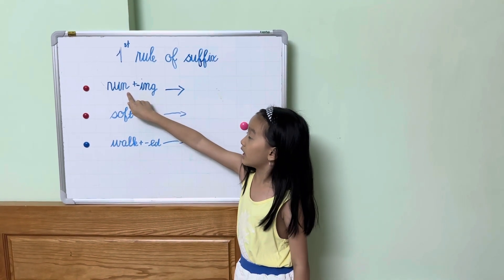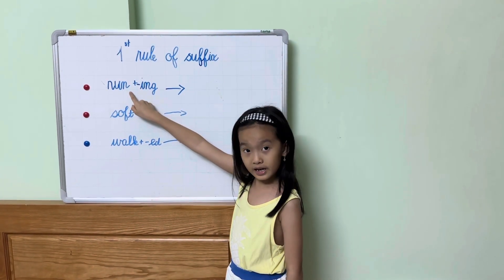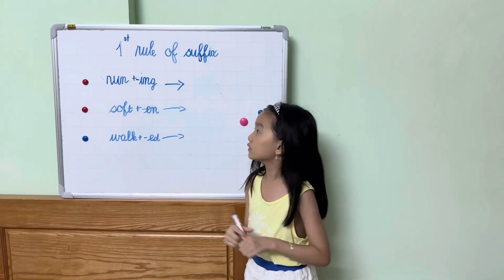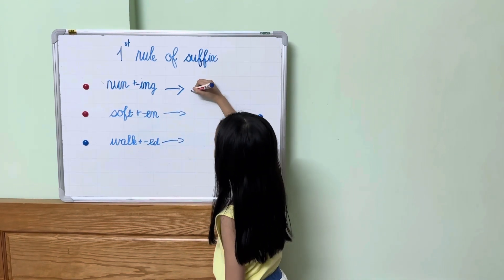Do you see this is one consonant? And do you see the vowel here? So now you know that we're going to double it. Let's write the word, running.